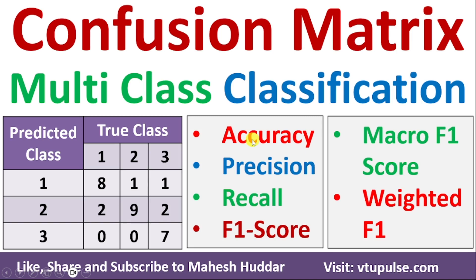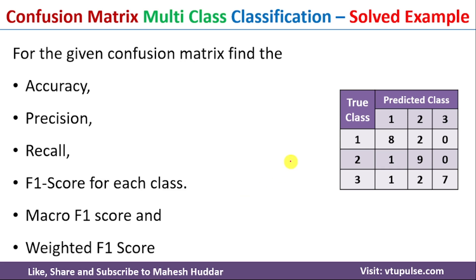Welcome back. In this video I will discuss how to calculate the different performance metrics given the confusion matrix for a multi-class classification problem. In this case we have been given a confusion matrix with three classes: class 1, class 2, and class 3. Given this confusion matrix, we will try to calculate the different performance metrics here.